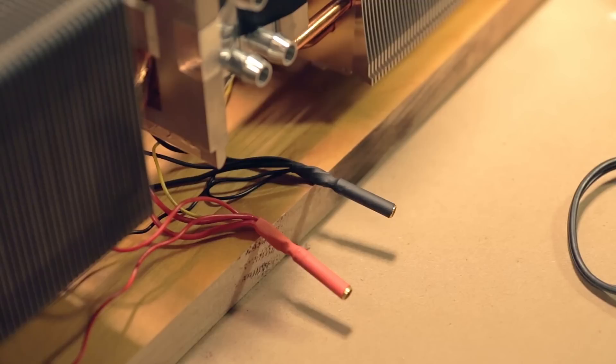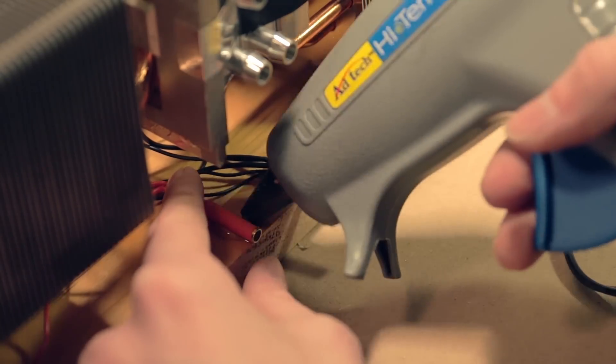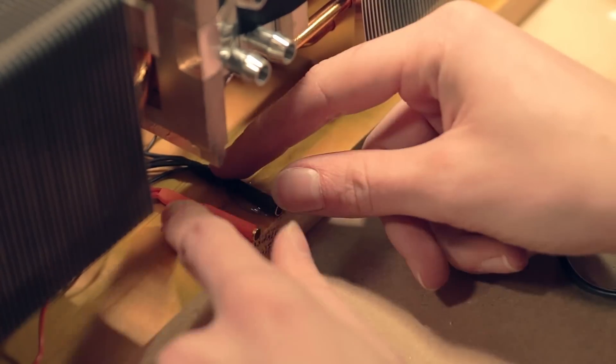Once those are soldered, I press some heat shrink tubing over the whole thing and shrink it down with a torch. All that's left to do now is to lay down two lines of hot glue and press both of the bullet connectors into the inside.